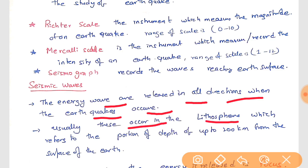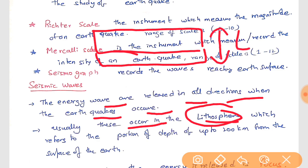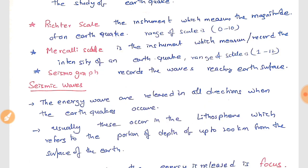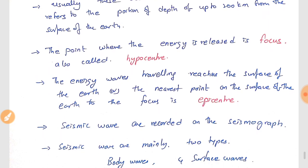Seismic activity usually occurs in the lithosphere. The lithosphere is the crust and the hardest part of the upper mantle, floating on the asthenosphere, which is the semi-liquid part of the mantle. The lithosphere refers to the portion up to a depth of 200 kilometers from the surface of the earth.